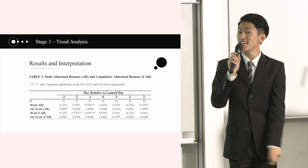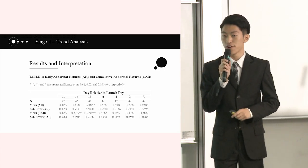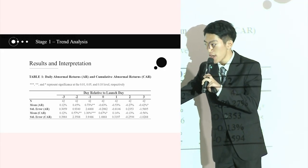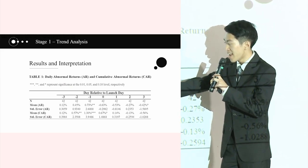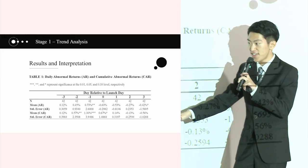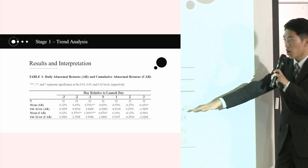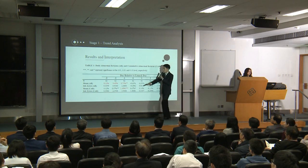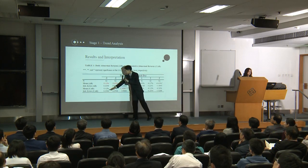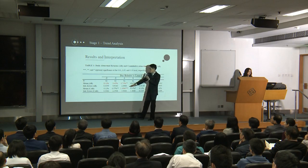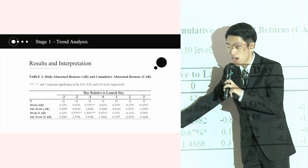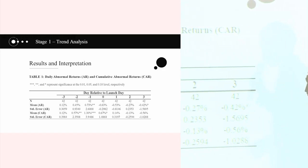Here are the results of our research. From this table, we can see the average abnormal returns are all positive before the new product launch. But on the product launch day, it drops significantly and keeps negative in the following days. For the cumulative abnormal return, it increased steadily from 0.12% to 1.3% in the three days before the new product launch and reaches a peak just one day before the launch, and then it also drops.